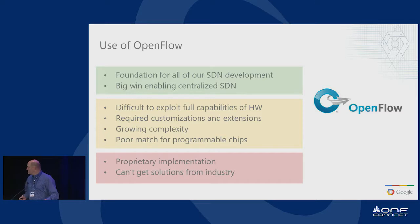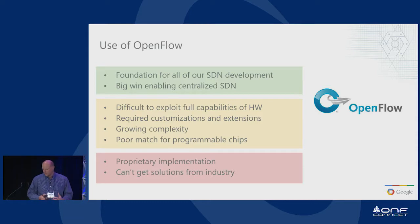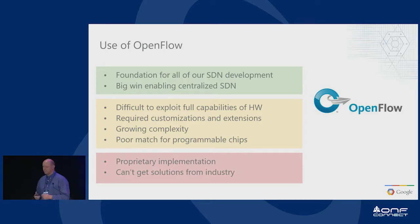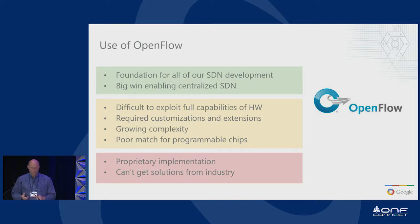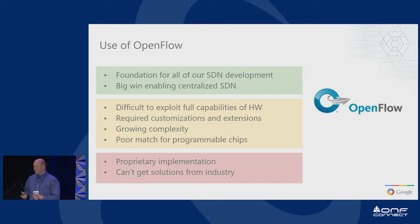At the time, we used OpenFlow, and this was a big win. We were able to use open source software and build our systems based on OVS, modifying it to work against hardware. This was the foundation for everything we did — it enabled our centralized SDN. As we progressed, we started running into problems. We found that OpenFlow didn't give us everything we wanted to fully exploit the features of these chips. So we had to do some funny workarounds, customizations and extensions to get the performance and functionality we wanted. And the more we did, the more complicated the protocol got.